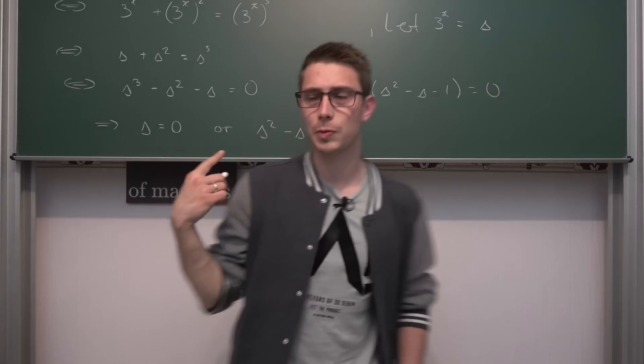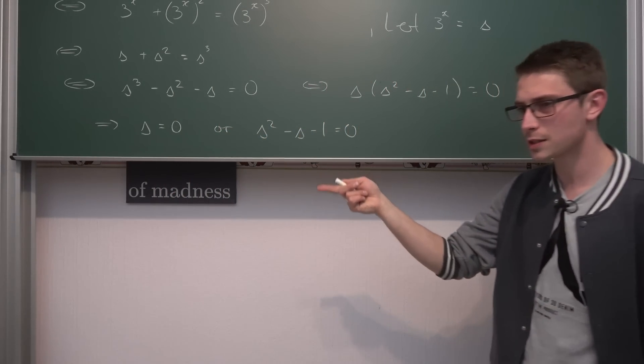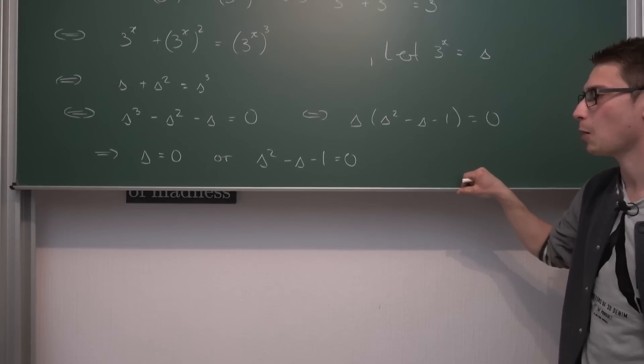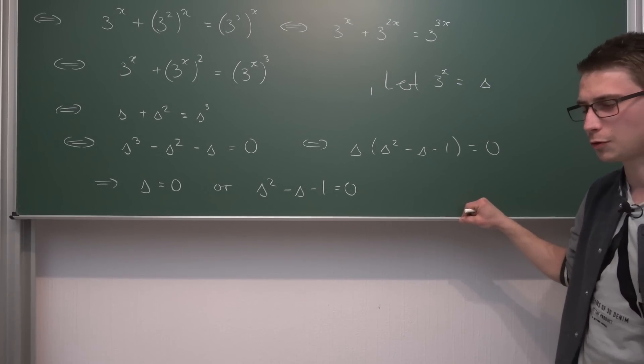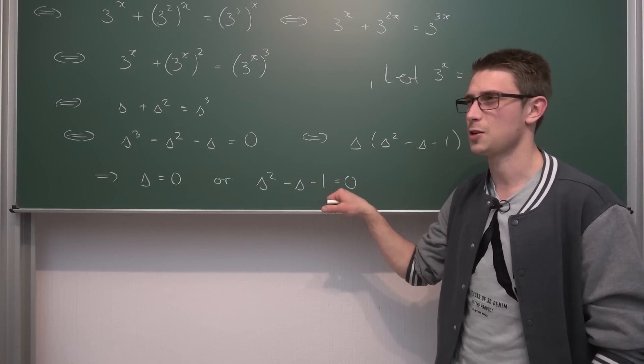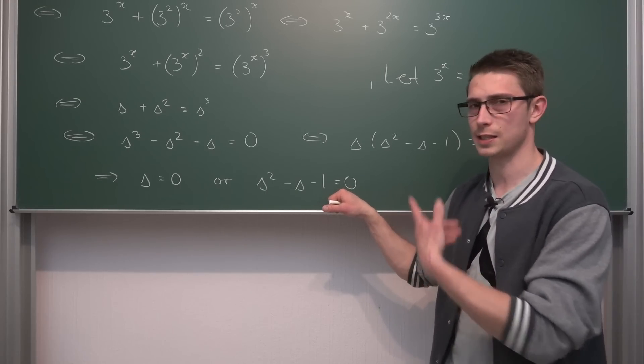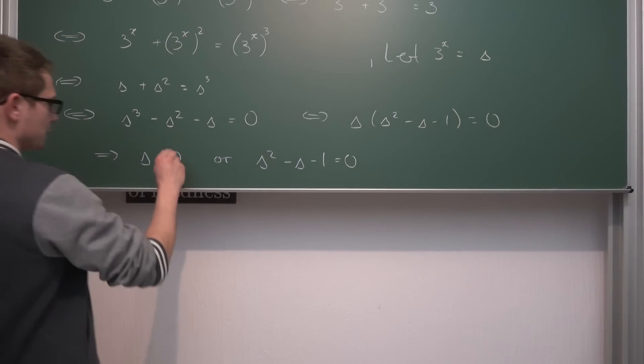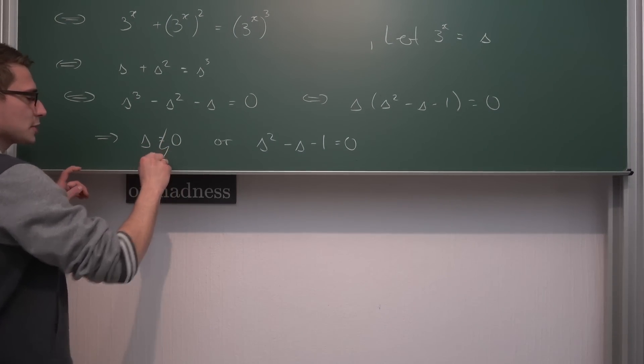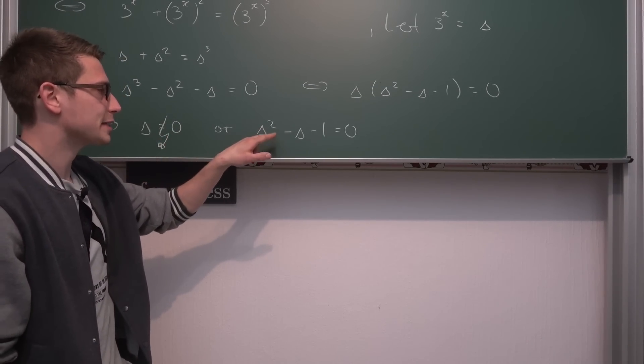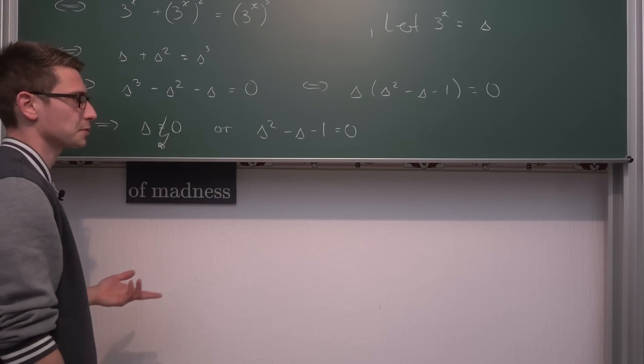We have either that delta is equal to zero or that delta squared minus delta minus one is equal to zero. Now, if delta were equal to zero, that also means at the same time that delta was 3 to the x power must be equal to zero. 3 to the x power equal to zero. This only happens in the limit. So there's no real number which satisfies this equation. So, meaning, we are going to run into a little contradiction here, you could say. So this right here doesn't hold. This case doesn't hold. Meaning we need delta squared minus delta minus one to be equal to zero.